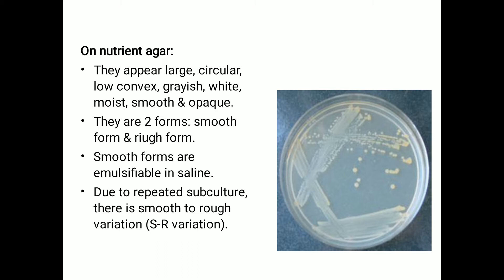The smooth forms are emulsifiable in saline. Due to repeated subculture, there is a smooth-to-rough variation, which we call S-R variation. This is how E. coli looks when grown in nutrient agar medium.